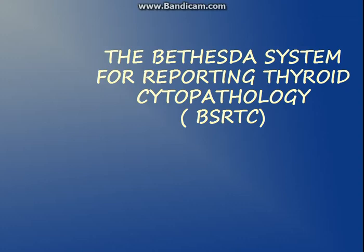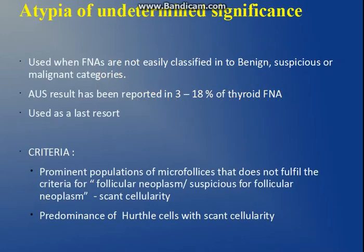Hello, this is the second part of the video. We will discuss the Bethesda system for reporting of thyroid cytopathology. In the first video, I discussed the general categories and categories one and two of the Bethesda system. This is the third category, so if you have not watched that video, I recommend you watch that first and then watch this video.